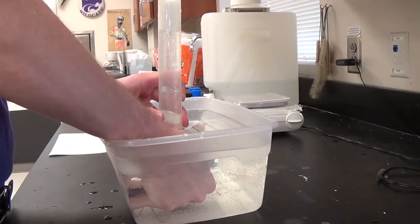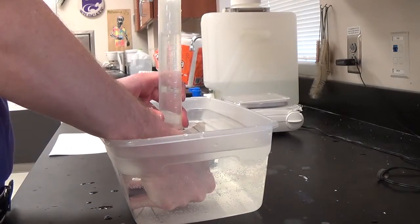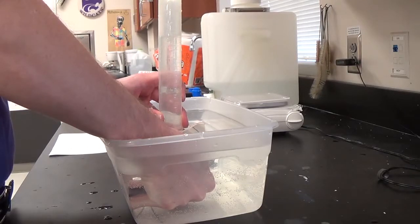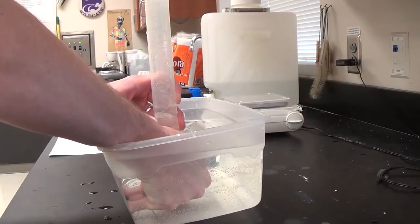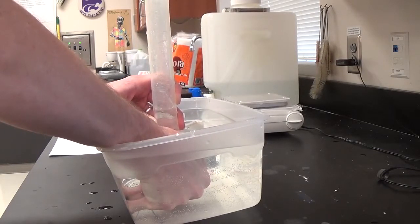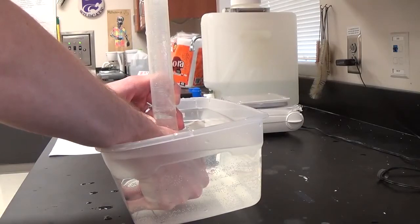As you collect the gas, you can see the bubbles here going up into the graduated cylinder. Keep collecting until you get close to about 95 milliliters. Remember that the graduations are upside down. When you get to about 95, you can stop.